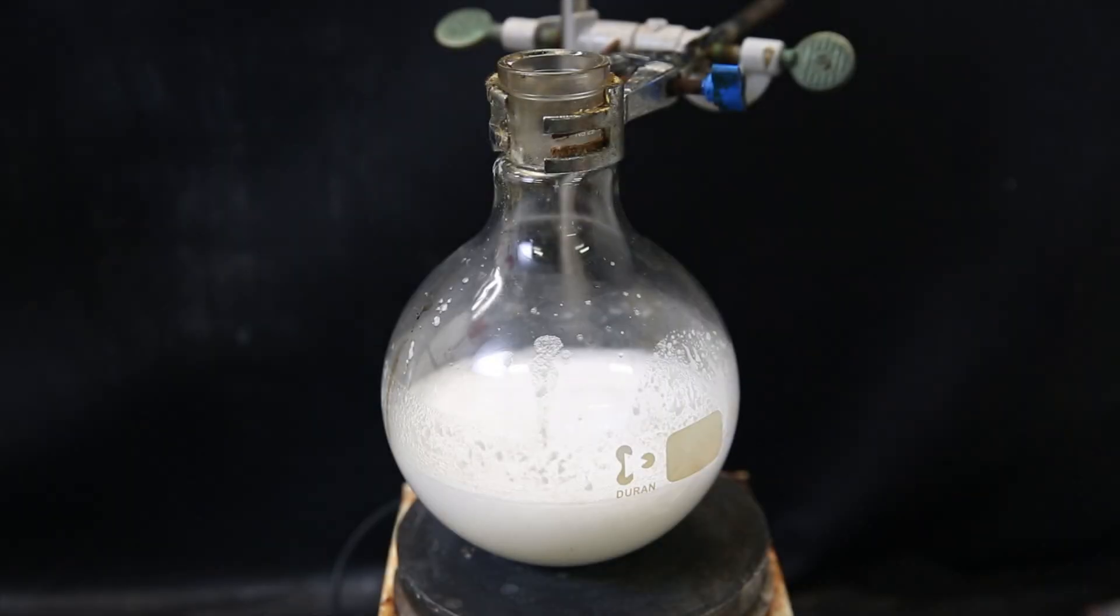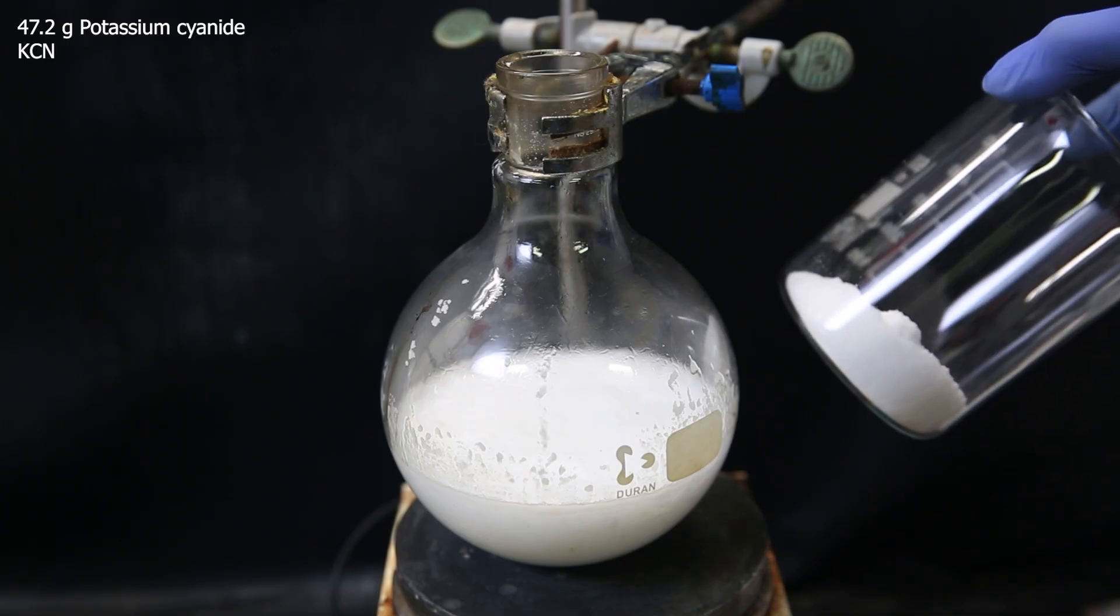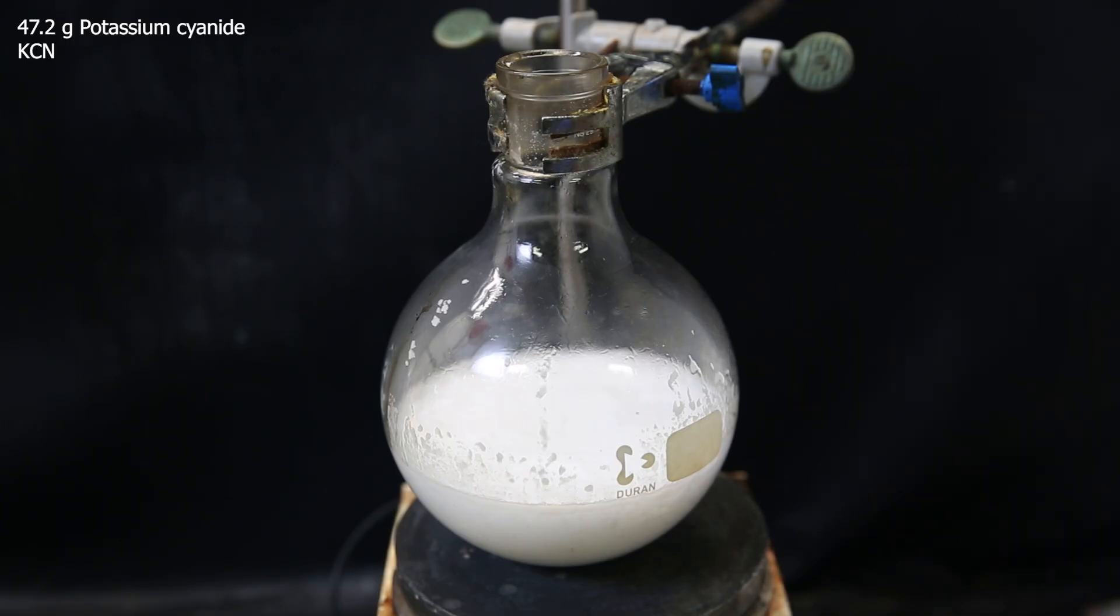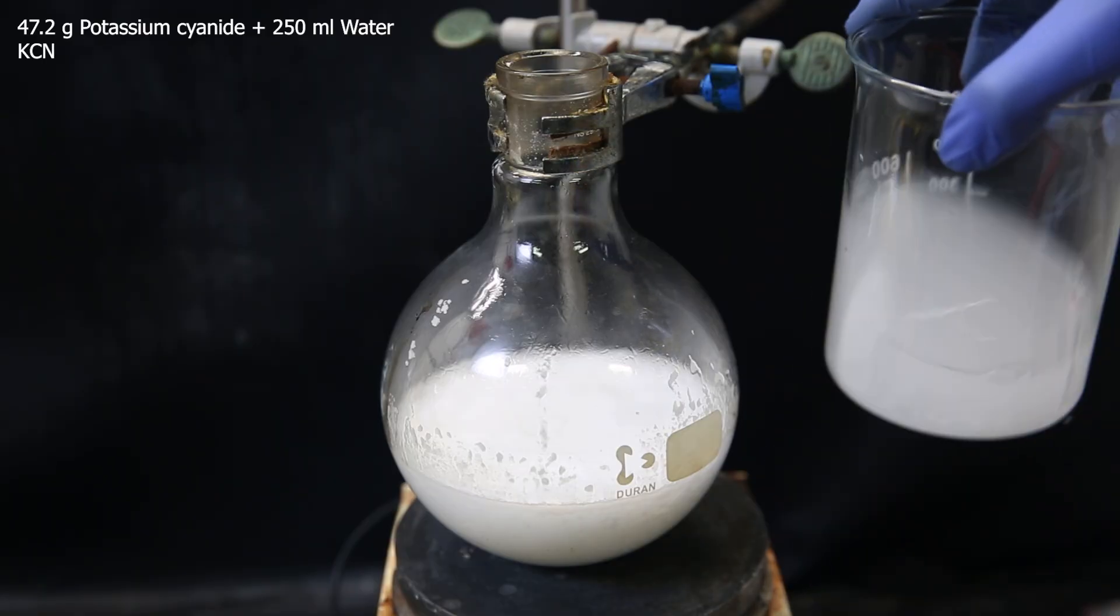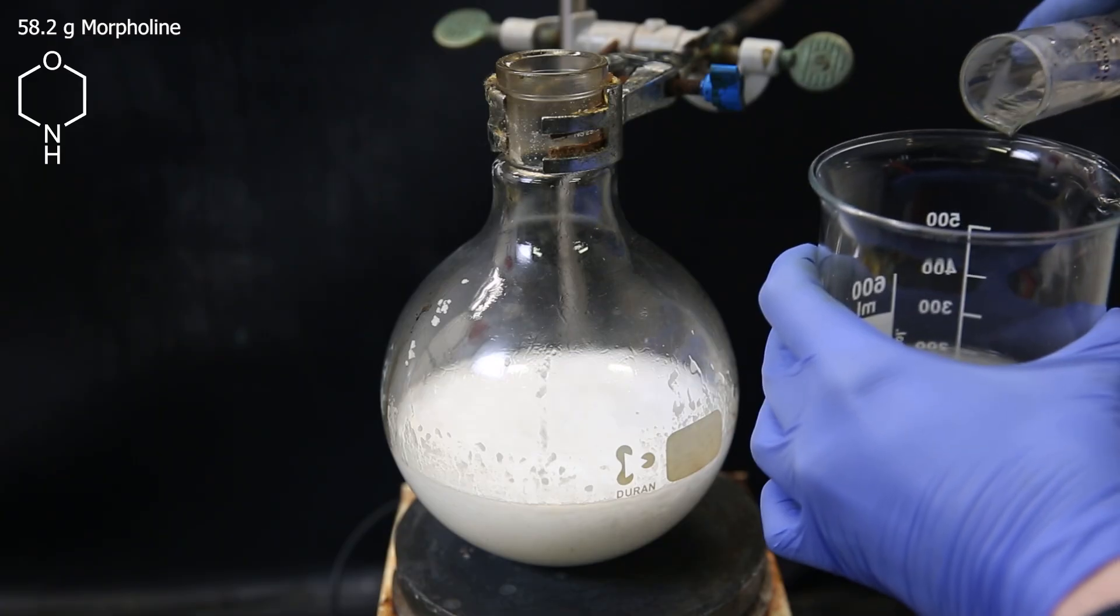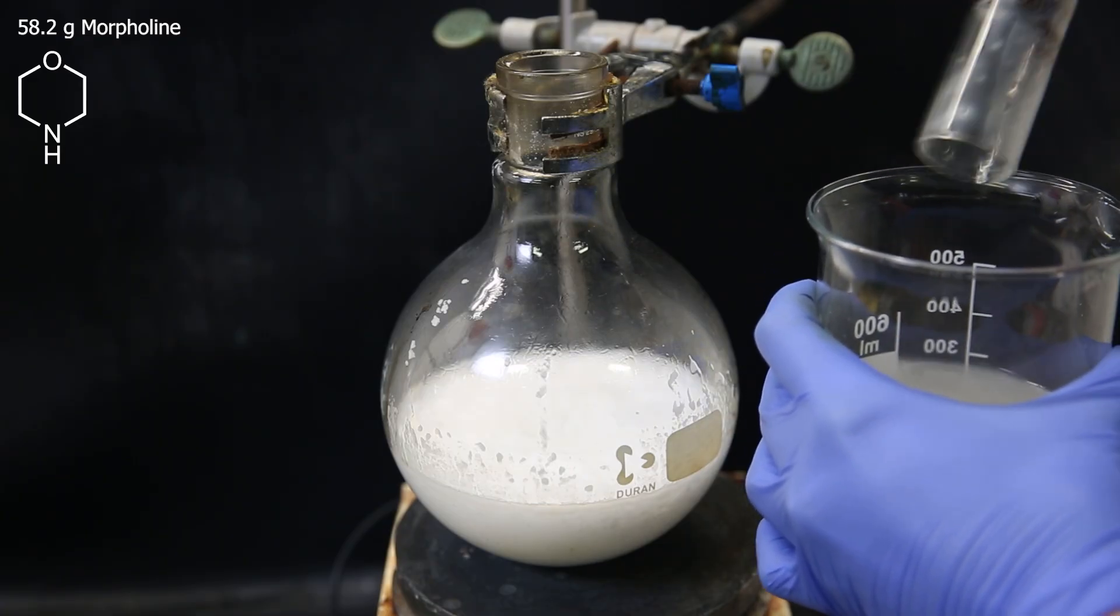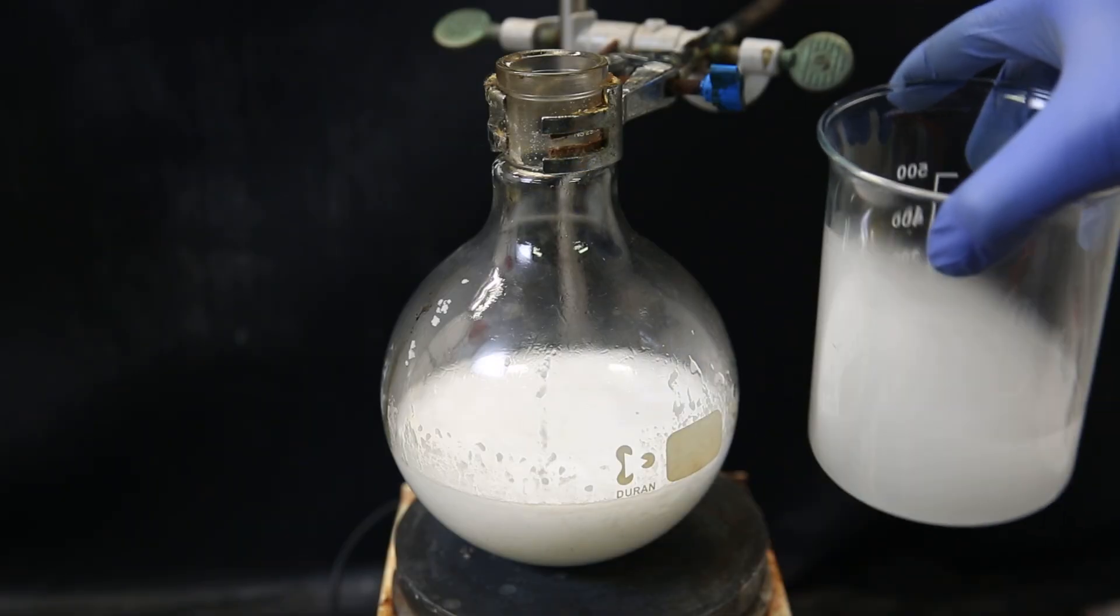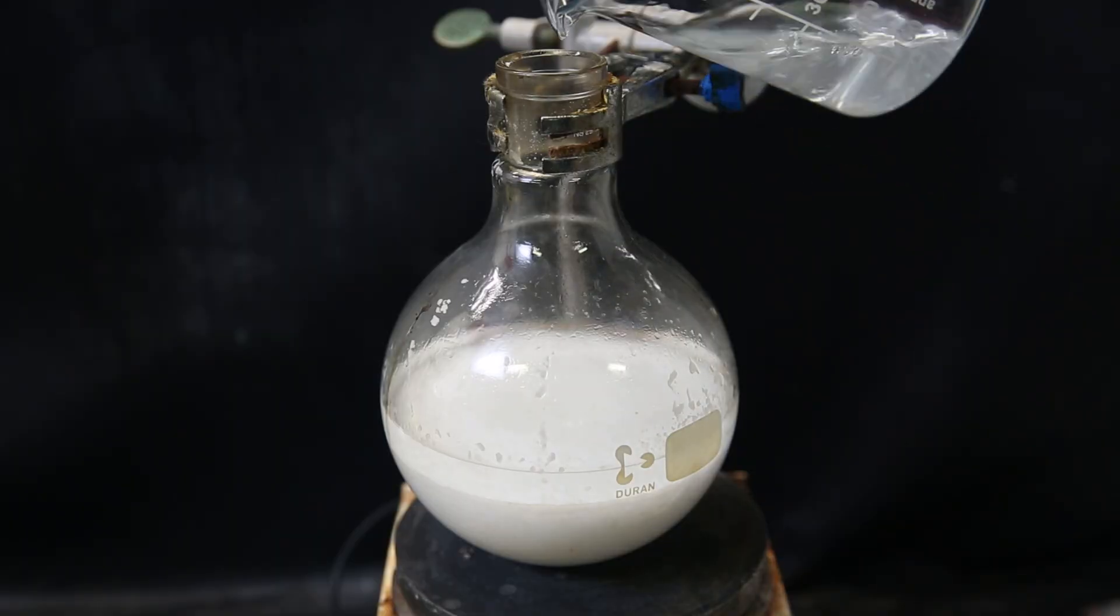After letting it stand for 15 minutes, I assume it all reacted, and I can use it directly for the next step. So first, in this beaker, I weigh out 47.2 grams of the salt potassium cyanide, which I dissolve in 250 ml of water. I then weigh out 58.2 grams of the reagent morpholine, and mix that into the potassium cyanide solution. When it has pretty much all dissolved, I add the full mixture to the cyclohexanone bisulfite complex.